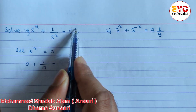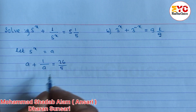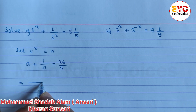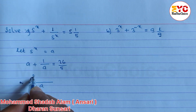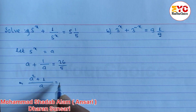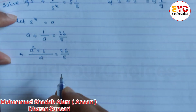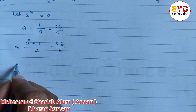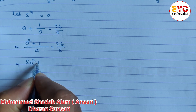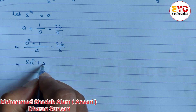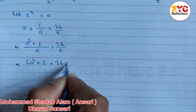5 of the 25 plus 1 is 26, so we can write 26 divided by 5. Now we have to take LCM. A into a — a squared plus 1 — is equal to 26 divided by 5. Now cross multiply: 5 into a squared, 5a squared plus 5 into 1 equals 26 into a, which gives 26a.